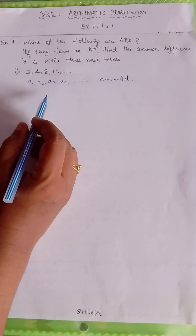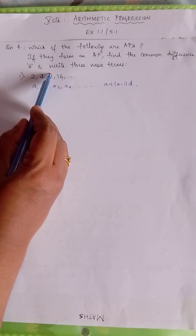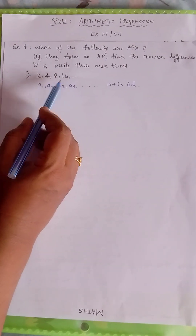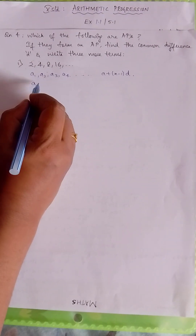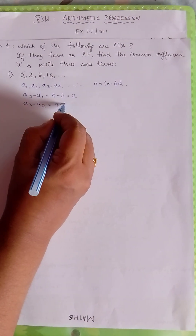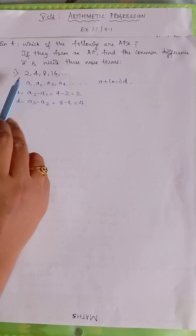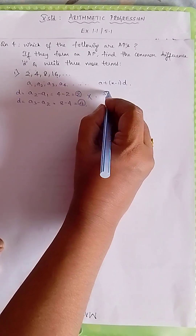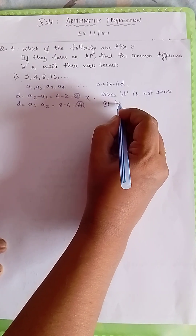So first, in order to find if it is an AP, you can see here: 2, 4, 8, 16. Now 2 plus 2 is 4, but 4 plus 2 is 6, not 8. So this is not an AP — it is a GP. In my later videos, you will learn what is a GP. To prove this, we write: A2 minus A1 = 4 minus 2 = 2; A3 minus A2 = 8 minus 4 = 4. Since D is not the same, it is not an AP.